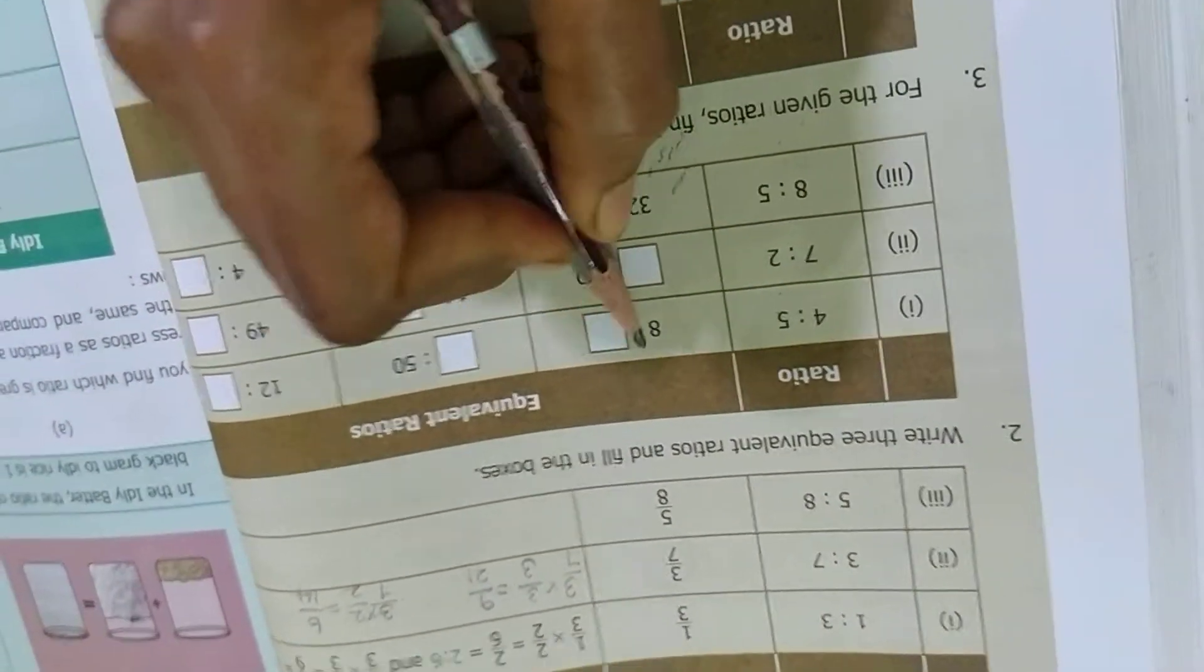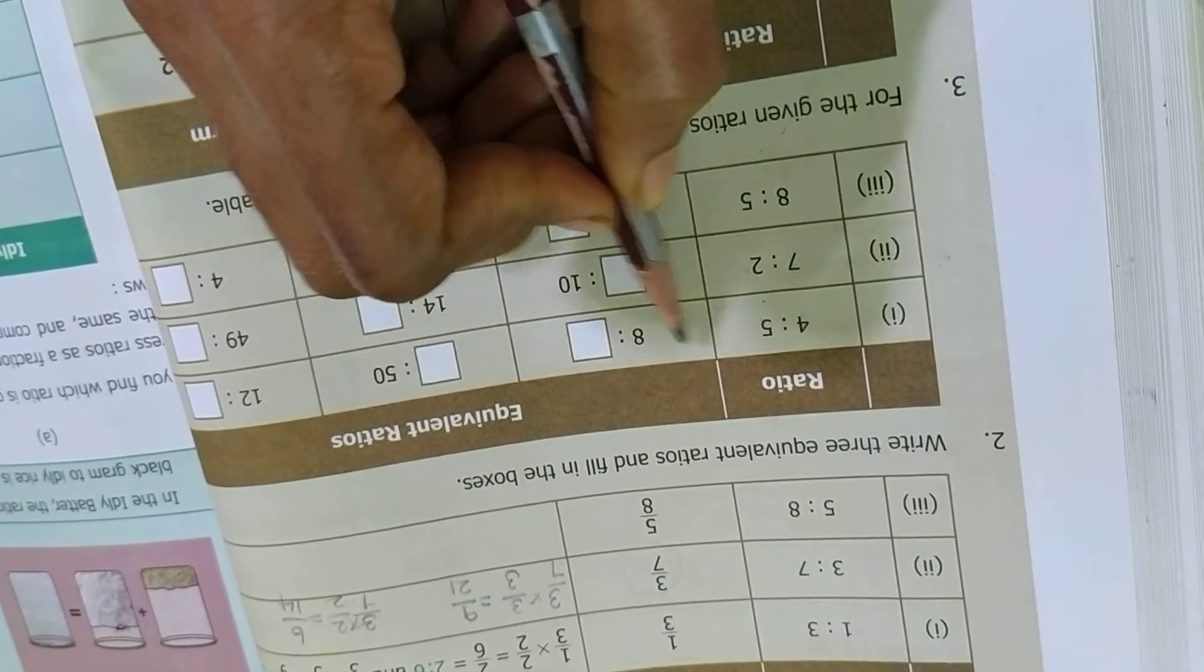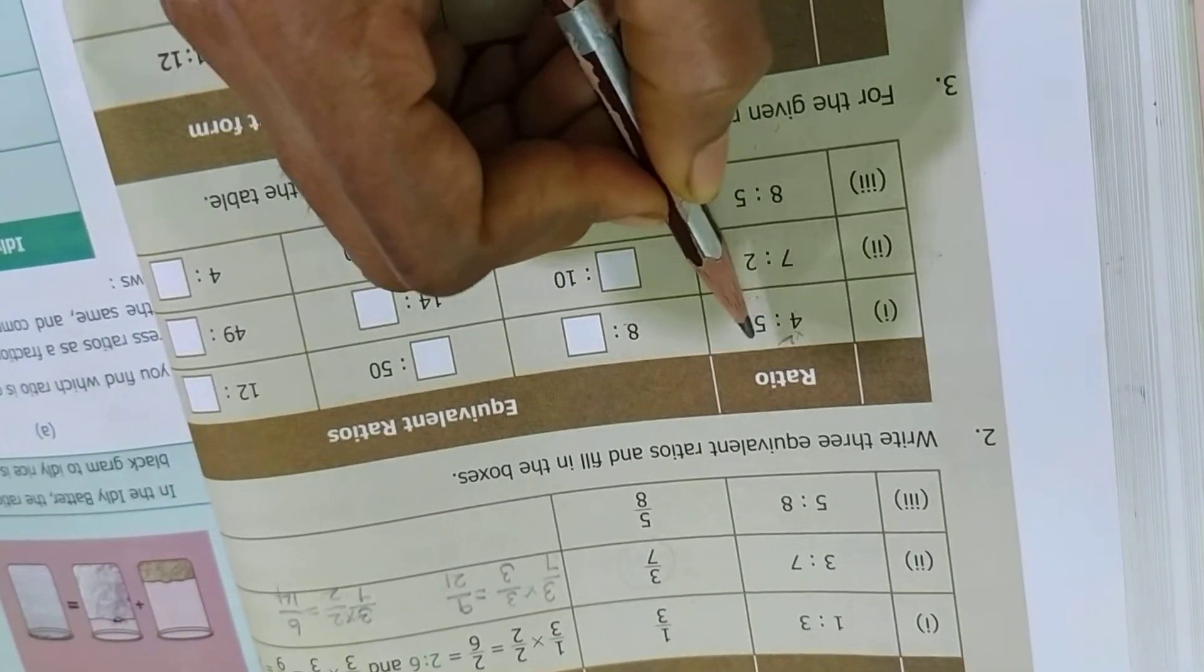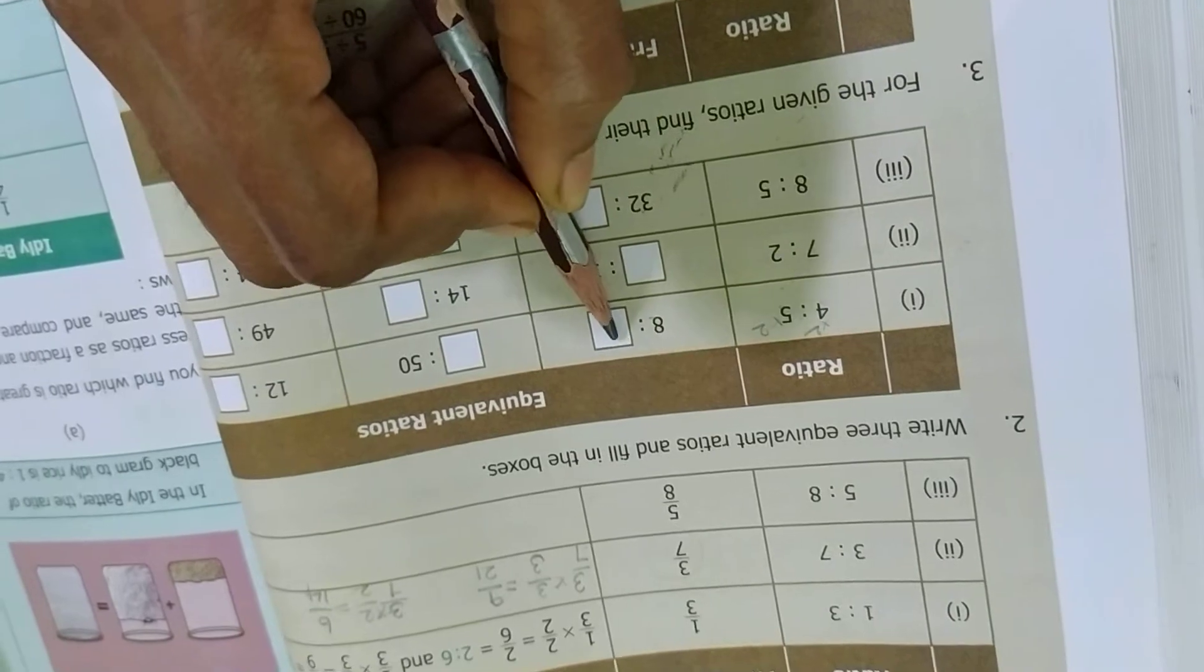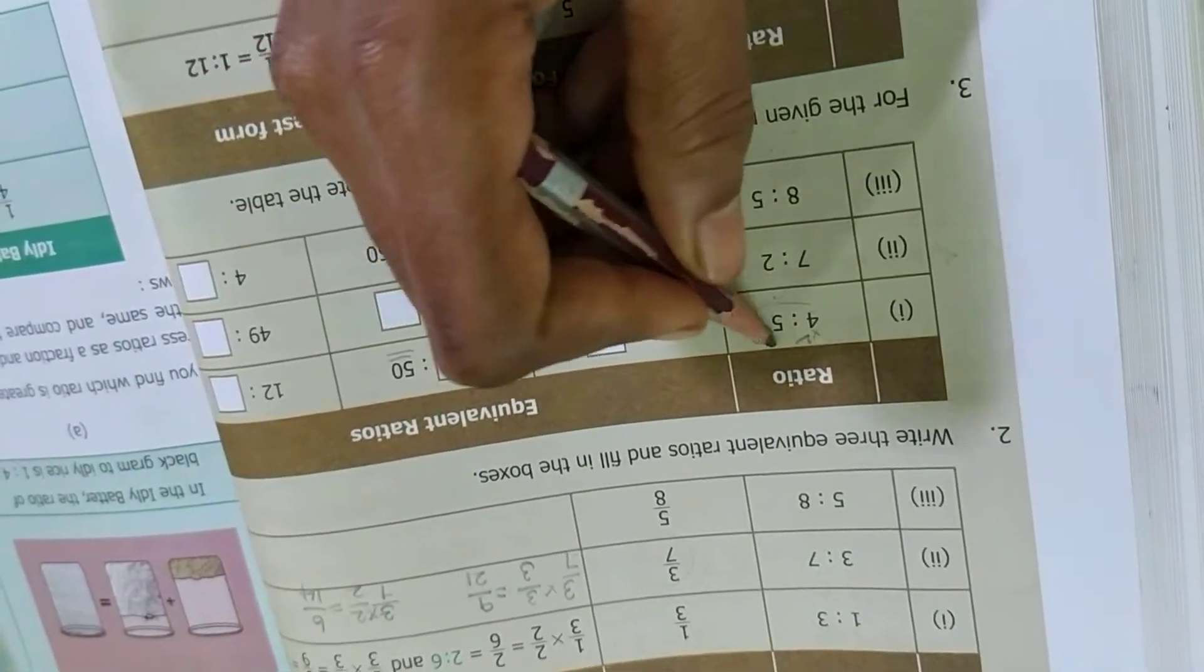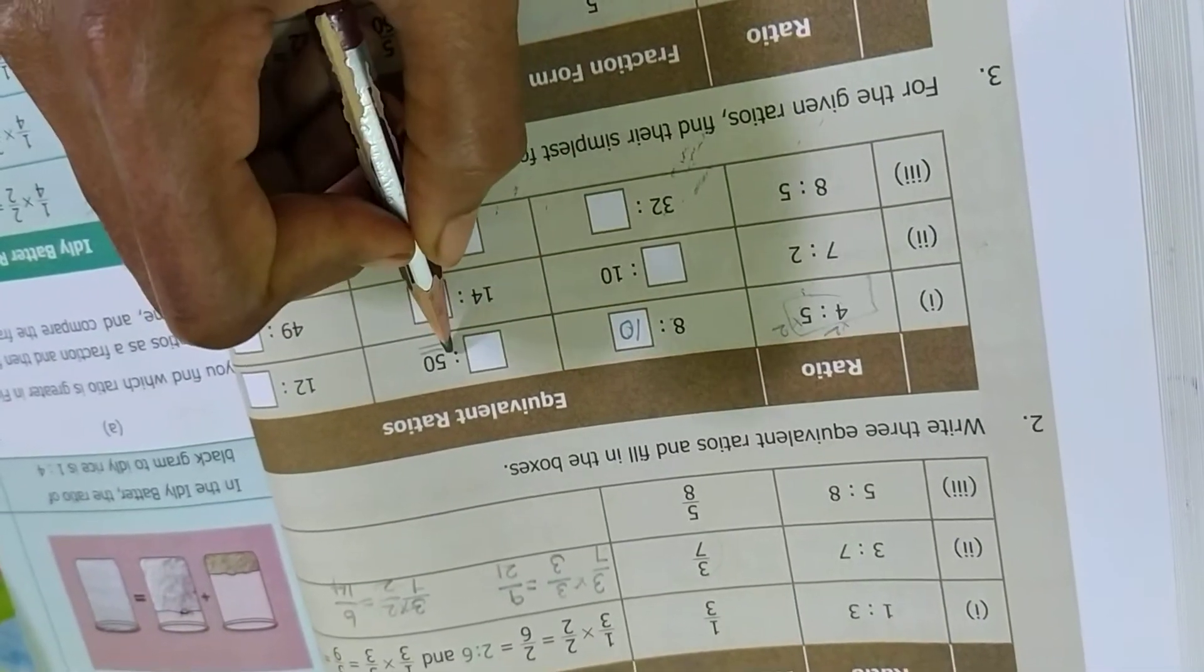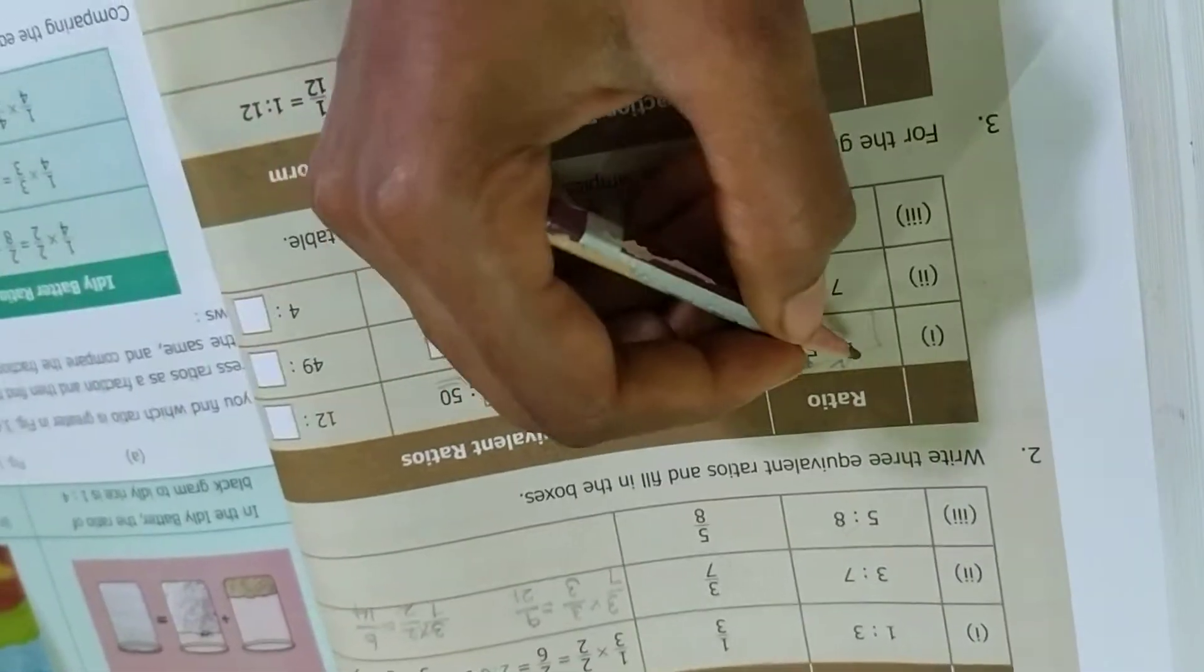So in the ratio 4 is to 5. In this place 8. So compare to this, in 4 table, where it is 8? 4 times 2 is 8. So 4 times 2 is 8. Then in this place 5 times 2 is 10. So I can find out. In this place 50. In this place 50. So this is the original ratio, 4 is to 5. In 5 table, 5 times 10 is 50.